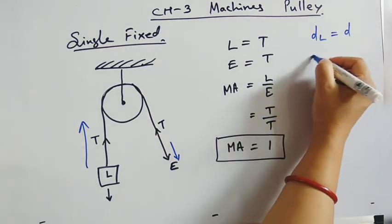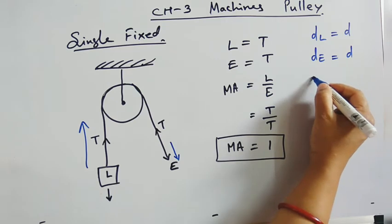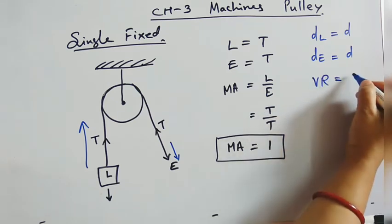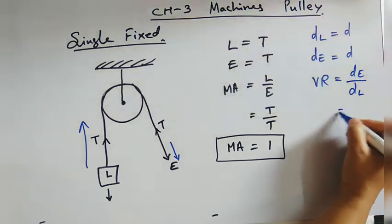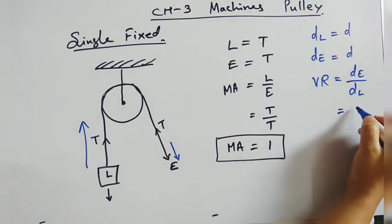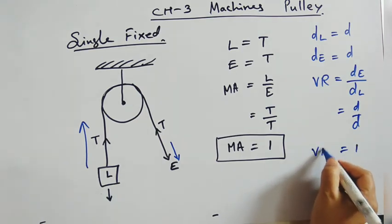By the same distance effort will also move. So distance moved by effort is also d. So velocity ratio, which is equal to displacement of effort upon displacement of load, which is equal to d upon d, that is equal to 1. So velocity ratio of a single fixed pulley is equal to 1.